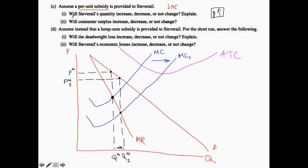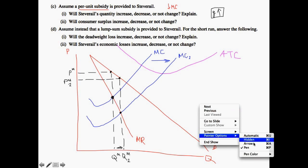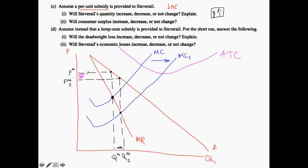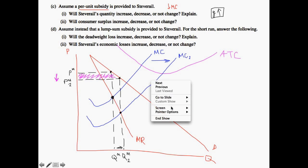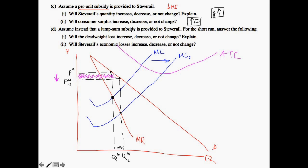The second part of the question asks about consumer surplus. We need to think about the original consumer surplus and the new consumer surplus. The consumer surplus in the first case would be this triangle here, and now it has changed to this larger triangle. Consumer surplus has increased as a result of the decrease in price and increase in quantity. That makes sense because there has been a decrease in price and consumers are now willing to buy more units. Consumers get the benefit from the per-unit subsidy because Steve Rail can now provide a more competitive price. So consumer surplus goes up.